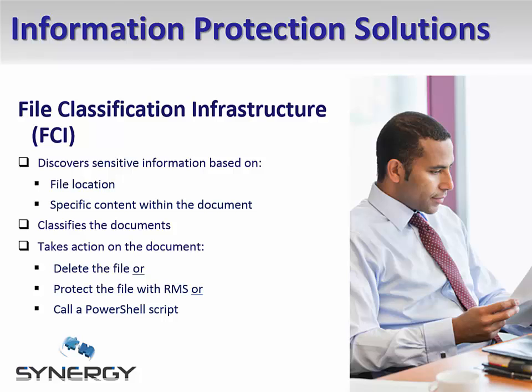FCI is a component of the file server role in Windows Server 2008 R2 and later, and is a solution for file classification, management, and reporting. FCI scans through documents looking for sensitive information as defined by the administrator. As FCI discovers sensitive information, it classifies the documents and then can take action, such as deleting the file, protecting the file with RMS, or calling a PowerShell script, on those documents that contain certain classifications.